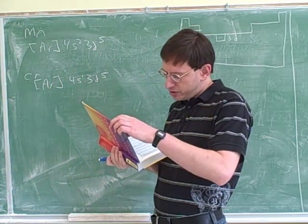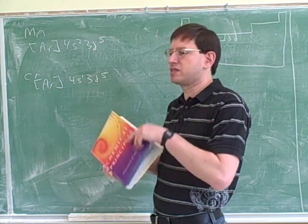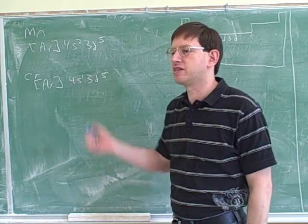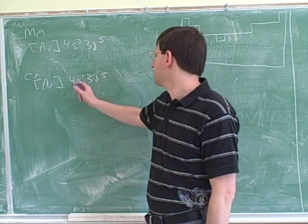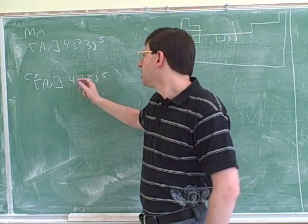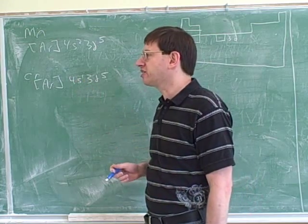Chromium would be ar 4s1 3d5. Chromium has six valence electrons total, because it's in the sixth column from the left total. But it turns out that instead of being 4s2 3d4, we only put one electron in the s block.